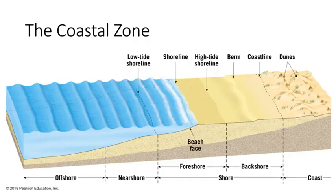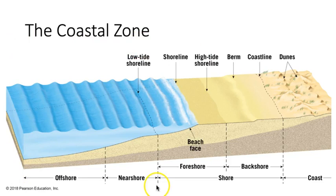The coast isn't precisely where land and water meet, but instead includes a wide zone representing the transition from land to sea. We call this the coastal zone. In this illustration here, we have many important vocabulary terms that describe the breakdown of the different parts of the coastal zone. You'll need to become familiar with these terms in order to complete lecture and lab assignments in this module.